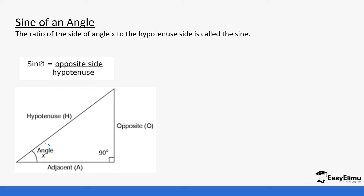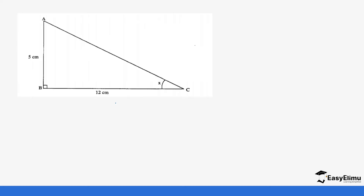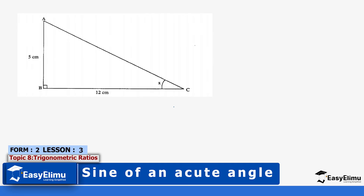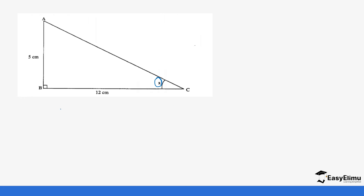So if we are looking at angle x, the opposite side is going to be this side, and the hypotenuse is going to be this side. For example, you are given a question and told to look for the sine of x. Remember, the sine of an angle is equal to opposite over hypotenuse.